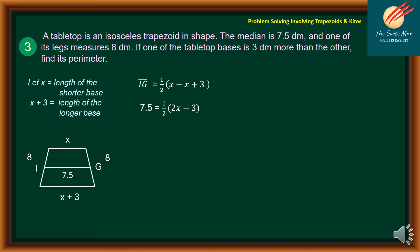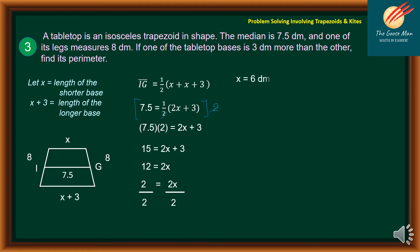Multiplying both sides of the equation by 2, we get 7.5 times 2 is equal to 2X plus 3. Simplifying, 15 is equal to 2X plus 3. Subtracting 3 from both sides, 12 is equal to 2X. Dividing both sides by 2, X is equal to 6 decimeters. This is the length of the shorter base. For X plus 3, that is 6 plus 3 is equal to 9 decimeters. This is the length of the longer base.